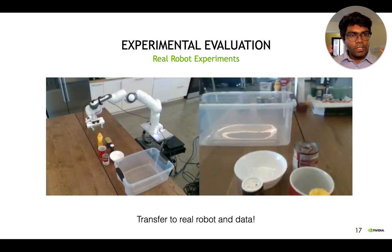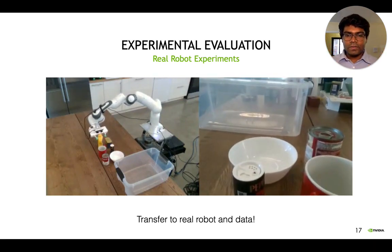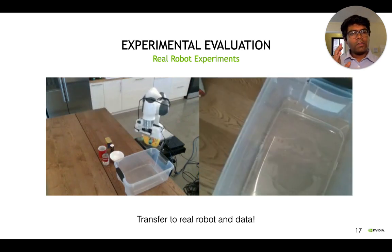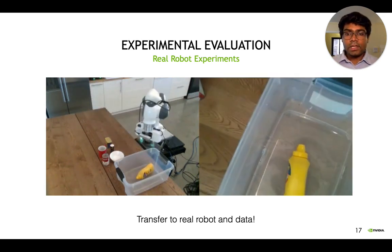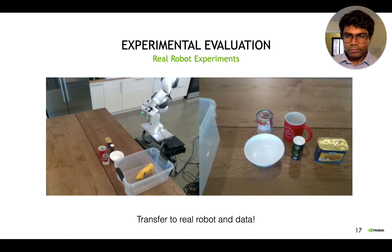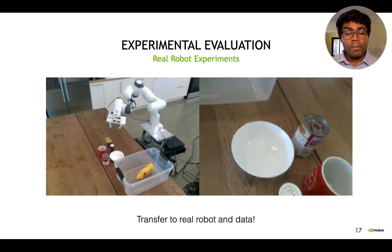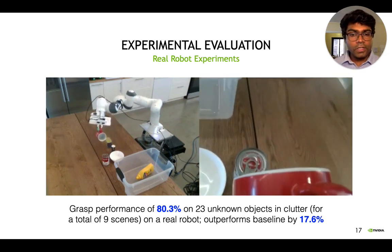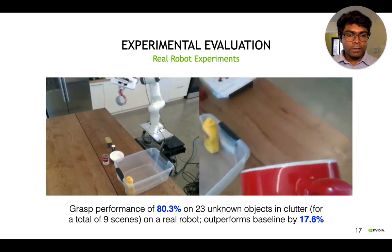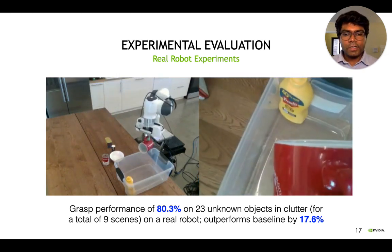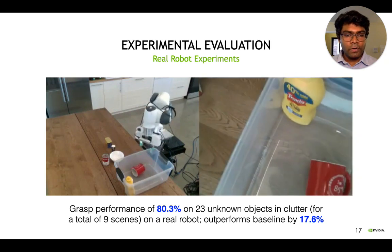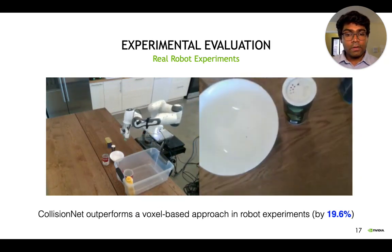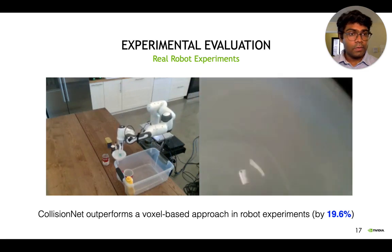The great thing is, even though we train only in simulation, we're able to transfer to the real robot and real point cloud data. As you can see, we're not doing planar grasps — we're doing 6DOF grasps. For instance, the robot grasps the mug by the handle. Overall, our approach achieves a performance of 80% on multiple unknown objects in clutter and outperforms baseline approaches. Collision Net also outperforms the voxel-based baseline approach in the robot experiments.